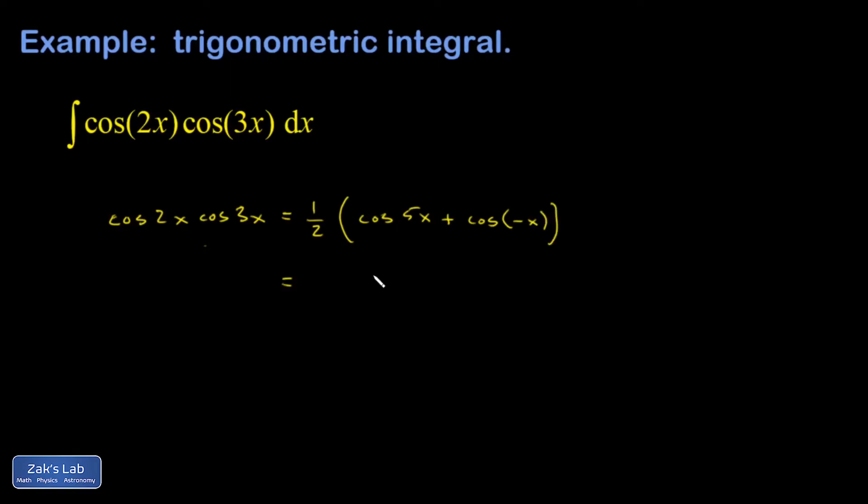There's a little nicer way to write this. The cosine function is even, which means the cosine of negative x is equal to the cosine of x, so I'm able to clean it up a little.